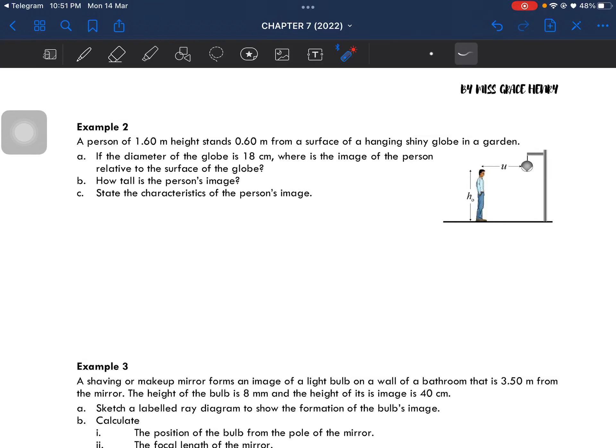Example 2. A person of 1.6 meter height stands at 0.6 meter from a surface of a hanging shiny globe in a garden.